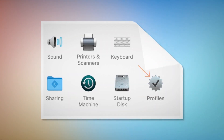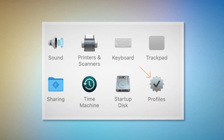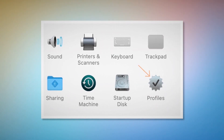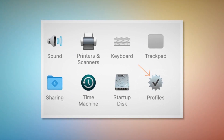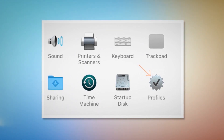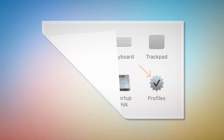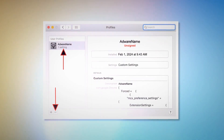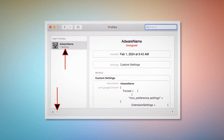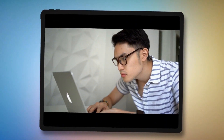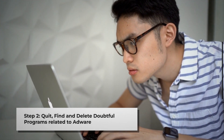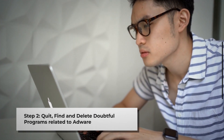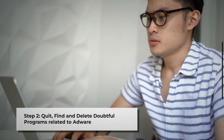But if you can find the Profiles icon as shown in the screenshot, click on it. Once you click on the Profiles icon, you will land on a window like the one shown. Select the unknown or doubtful profile and then click the minus button to remove the profile. If you can't find any Profiles icon as mentioned in step one, just follow step two directly.